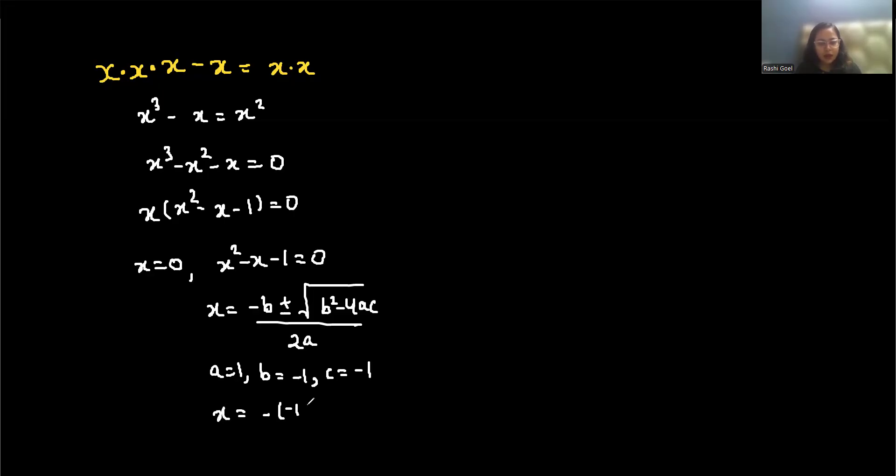So x = (-(-1) ± √((-1)² - 4(1)(-1))) / 2(1). x = (1 ± √(1 + 4)) / 2.